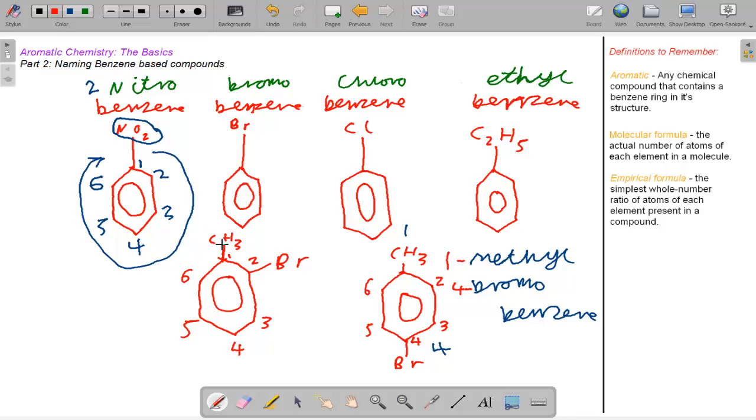Take this particular one as well - this one would be one methyl, two bromobenzene. So naming the different compounds for benzene is quite straightforward.